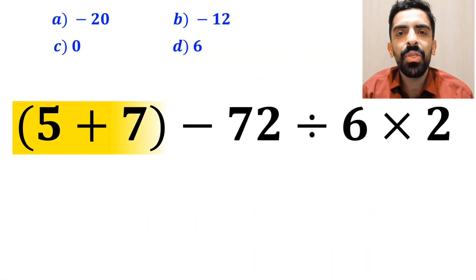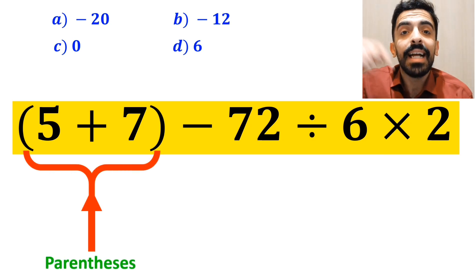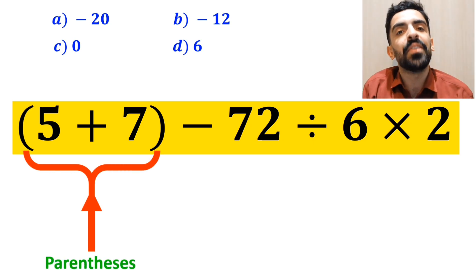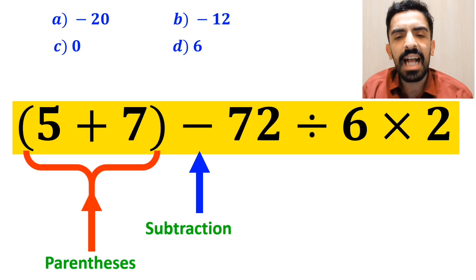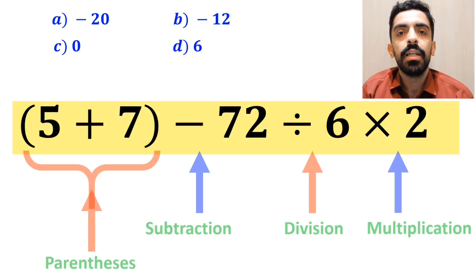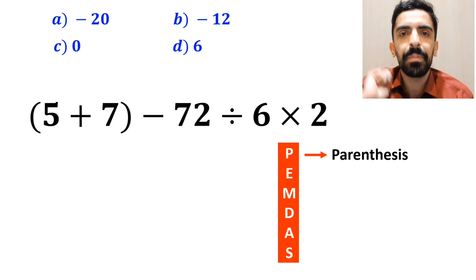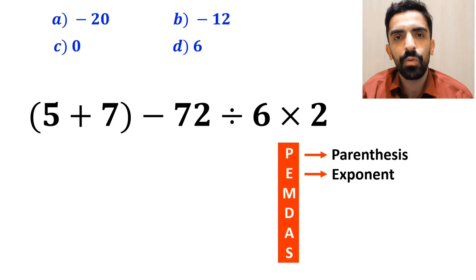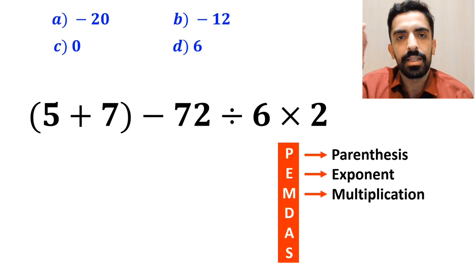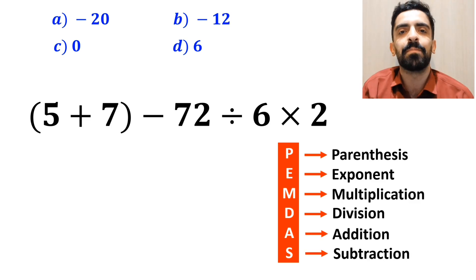All right, now let's go through this question step-by-step and solve it together. To solve this question, we need to follow the PEMDAS rule step-by-step. In this rule, P stands for parenthesis, E stands for exponent, M stands for multiplication, D stands for division, A stands for addition, and S stands for subtraction. We must perform all the operations strictly from top to bottom according to the PEMDAS rule.